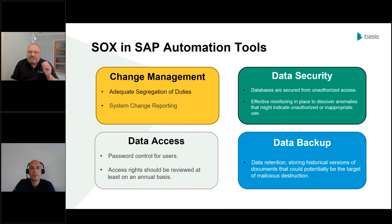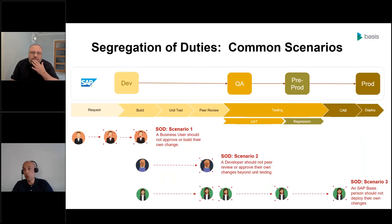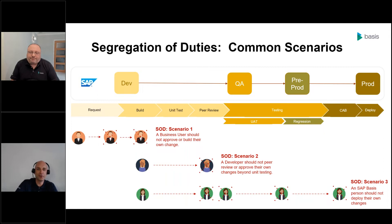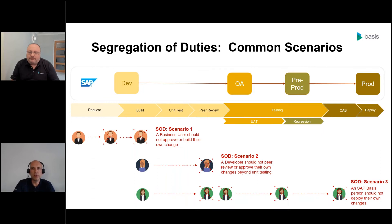Just to clarify — what exactly do you mean by segregation of duties? Going back to the four-system landscape flow we looked at earlier — there were multiple steps and multiple people involved. Segregation of duties is ultimately about making sure that the same person cannot do certain steps within that end-to-end process. For example, you wouldn't want a business user who raises the request for a change to then make that change themselves. You wouldn't want a developer to peer review their own changes. And you probably wouldn't want an SAP Basis person to be deploying the changes that they themselves made. It's about having multiple different people involved at key stages to get much less risk of something — at best stupid, at worst fraudulent — being done to your production SAP system.